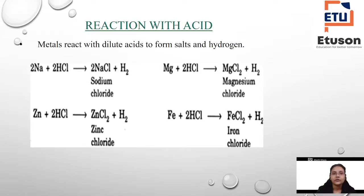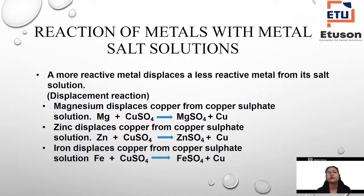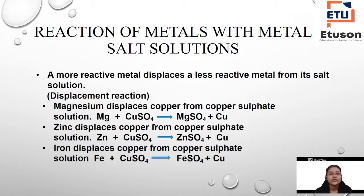Metal reacts with dilute acids to form salts and hydrogen. The chloride formed is a salt — for example, magnesium chloride is a metal chloride which is a form of salt. NaCl, the salt we eat, is a type of salt. Next: reaction of metals with metal salt solutions. A more reactive metal displaces a less reactive metal from its salt solution — this is called a displacement reaction.